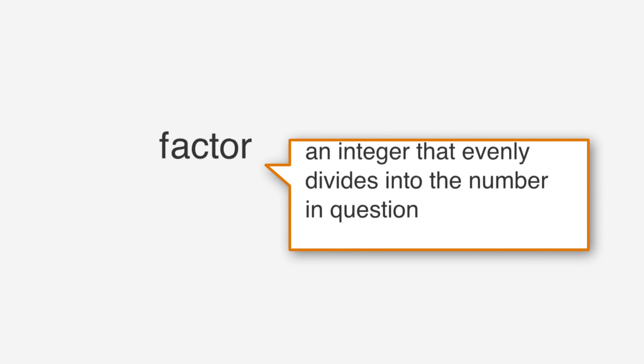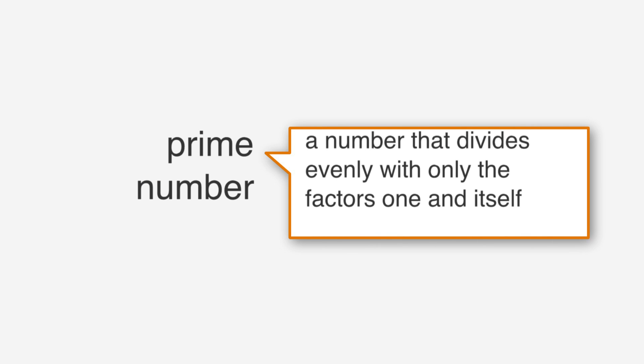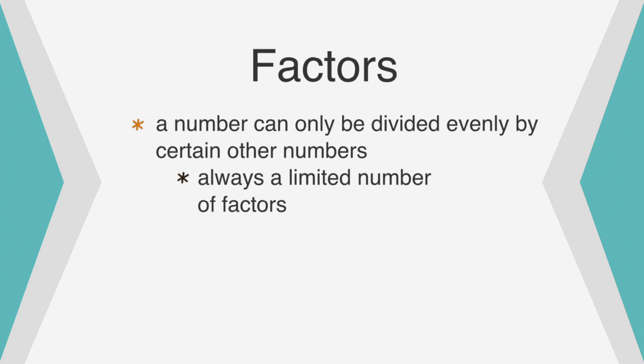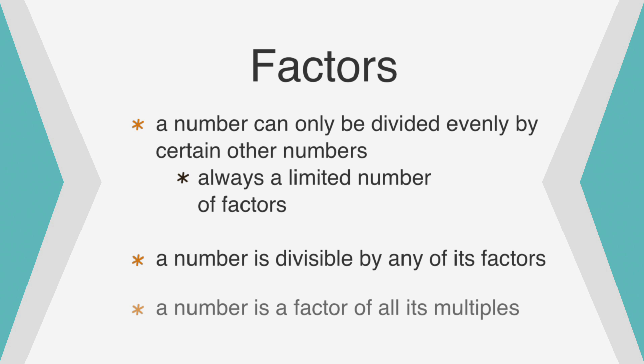This brings us to factors. A factor is an integer that evenly divides into the number in question, and a number that divides evenly with only the factors 1 and itself is called a prime number. Even apart from prime numbers, a number can only be divided evenly by certain other numbers, and this means there is always a limited number of factors for any given number. Also, a number is divisible by any of its factors and is also a factor of all its multiples.